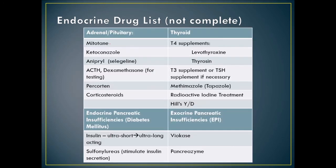When overdosing endocrine drugs, the result is often the opposite condition. For example, overdosing a hypothyroid patient produces hyperthyroidism; overdosing in hypoadrenocorticism produces hyperadrenocorticism. If you have any questions, bring them to class for discussion, because you're probably not the only one.